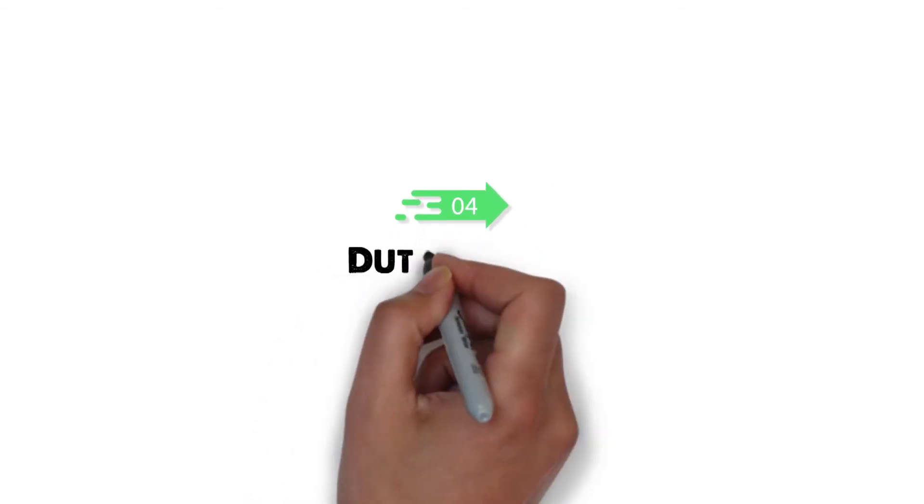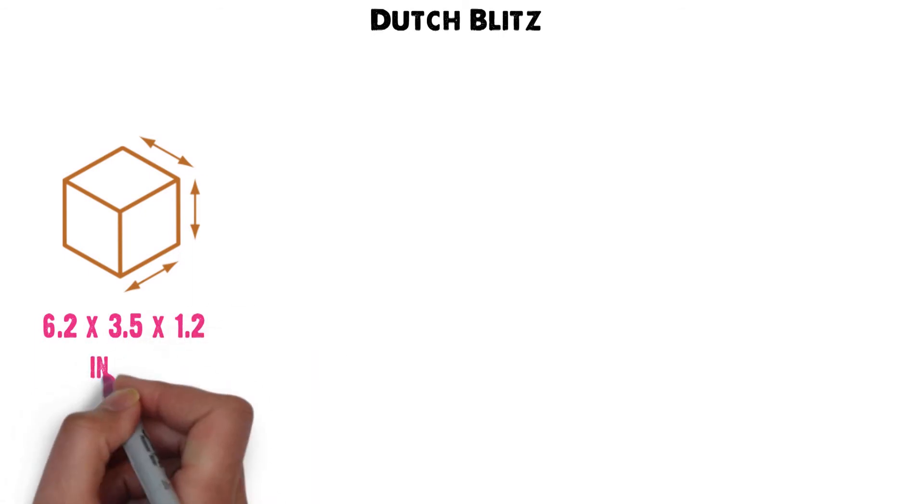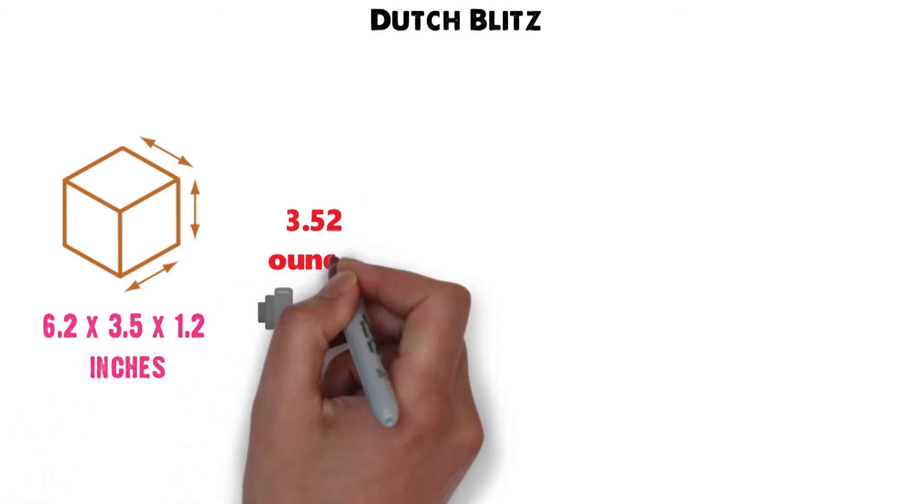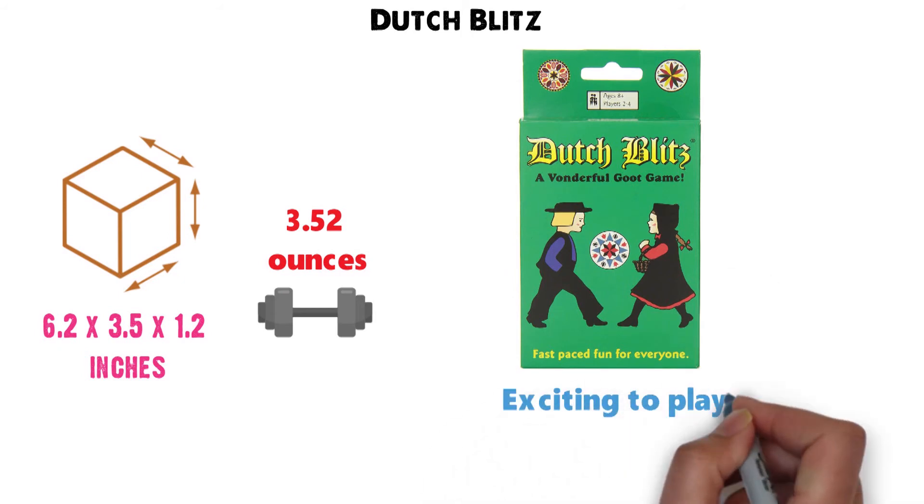At number 4, we have the Dutch Blitz. Dimensions of this product are 6.2 x 3.5 x 1.2 inches and it weighs 3.52 ounces. The Dutch Blitz is a card game, exciting to play and easy to learn. It's perfect for family game nights or to play with a group of good friends.